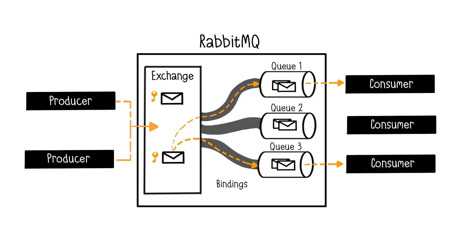Overall, RabbitMQ is like a postal service for your applications. The producer is like someone sending a letter. The exchange acts as the post office, sorting and directing the letters to the appropriate destination. The queue is the mailbox where the letters are stored, and the consumer is the person who picks up the letter from the mailbox.